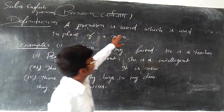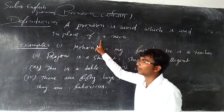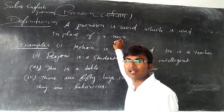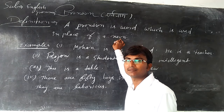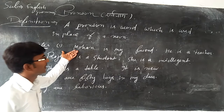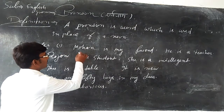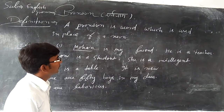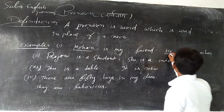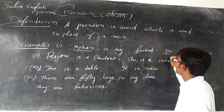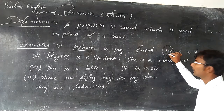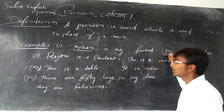A pronoun is a word which is used in place of a noun. Sarvnam is a word called pronoun. For example, 'Mohan is a boy' — in this sentence Mohan is a noun. And in the same example we will see: 'He is a teacher.' We are talking about Mohan but we replace the noun with a pronoun.